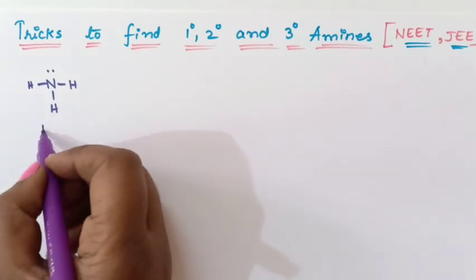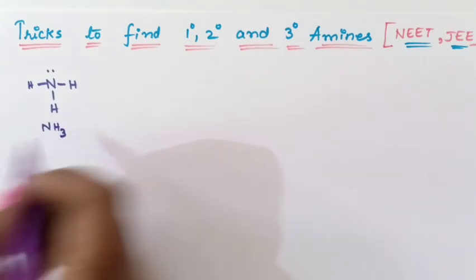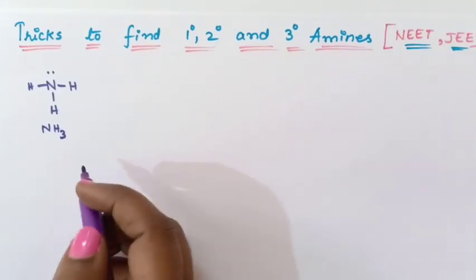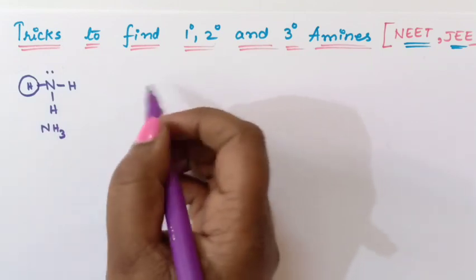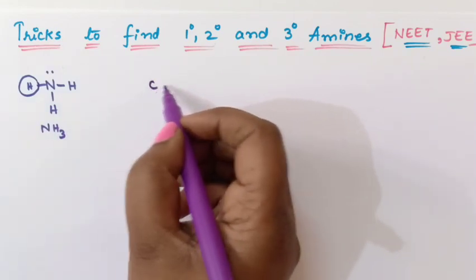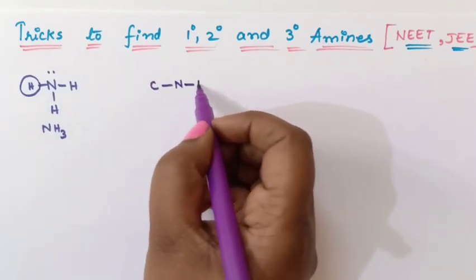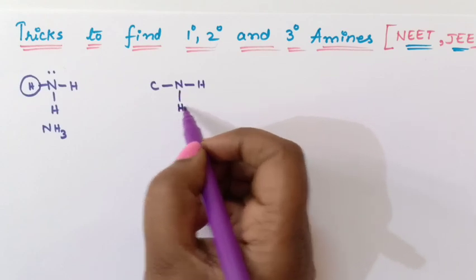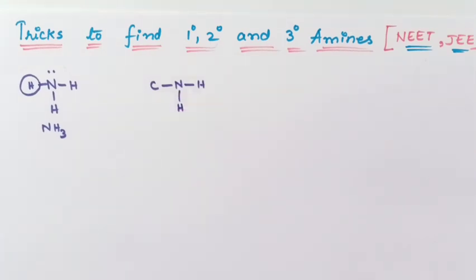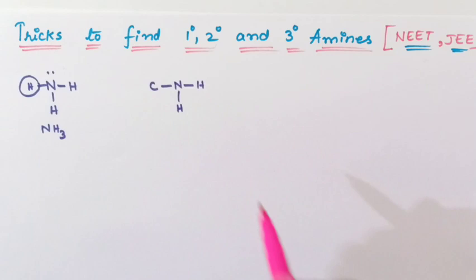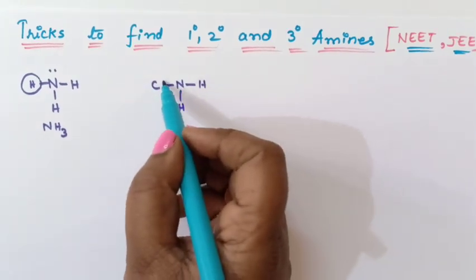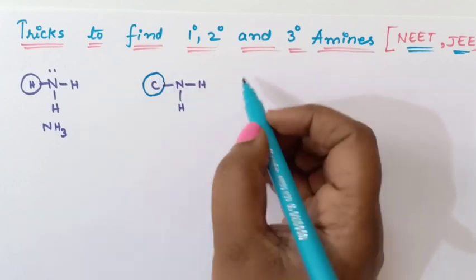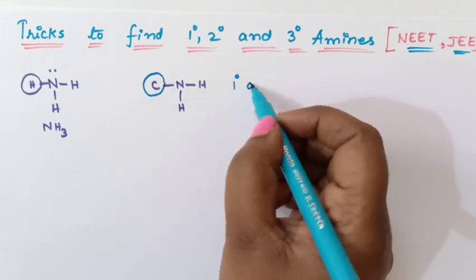So now students what I will do is I will replace 1 hydrogen with 1 carbon. So carbon, nitrogen, hydrogen and hydrogen. So if I replace 1 hydrogen with 1 carbon you will get like this. So if nitrogen is connected to 1 carbon then it is called as primary amine. Is that clear?